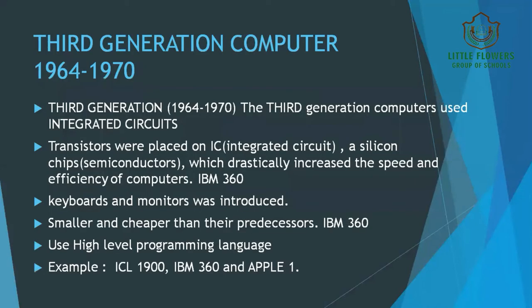Now let's move to the third generation of computers, which started from 1964 till 1970. Instead of transistors, integrated circuits — also called ICs or chips — were used. An IC could house a large number of transistors placed on a silicon semiconductor chip, which drastically increased the speed and efficiency of computers. For example, we have IBM 360. Keyboards and monitors were also introduced. These computers were smaller and cheaper than their predecessors, and they used high-level programming languages.